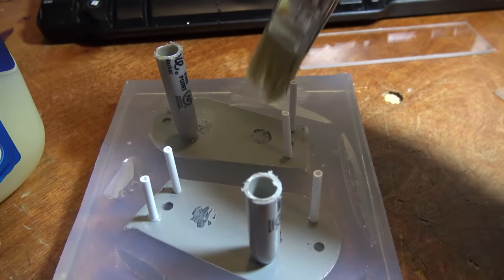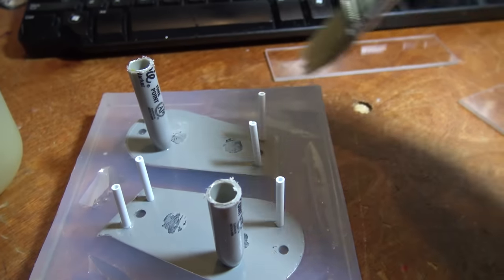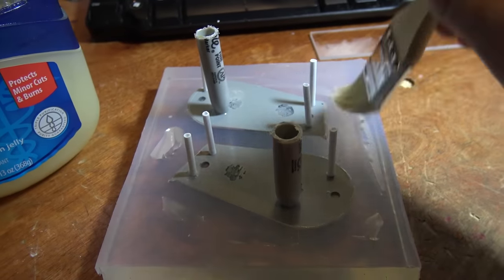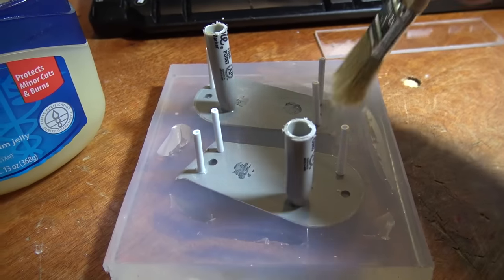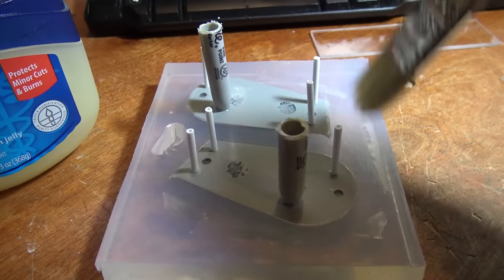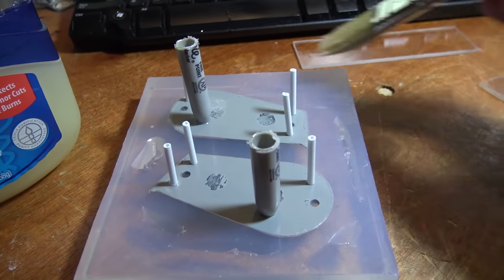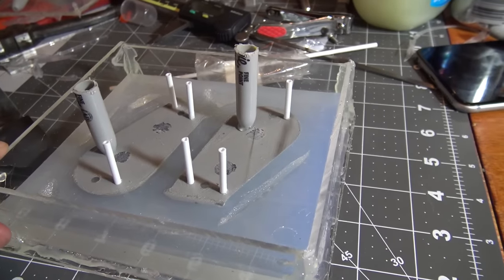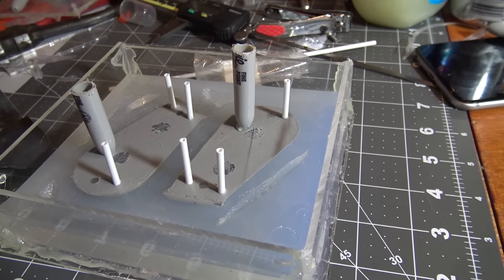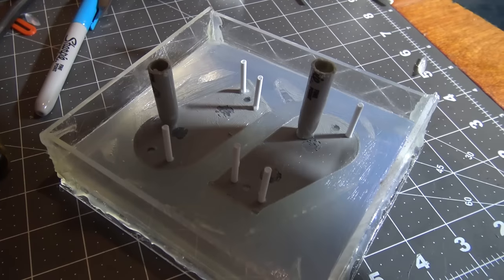Then I added some mold release, so I'm just using Vaseline, they didn't have anything else. Silicone only sticks to silicone, so you really only need to make sure you're getting the mold release on the actual silicone or else you won't be able to pull it apart. Then I made another little mold box and then I added some pour spouts, just using some cut-off Sharpies and some air vents.